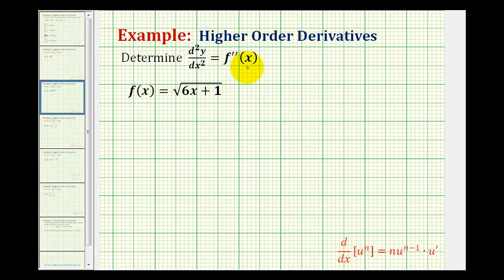We want to determine the second derivative of the given function, f of x equals the square root of 6x plus 1. To determine the second derivative of the function, we'll find the derivative of the first derivative. To determine the first derivative, we need to recognize that we have a composite function.